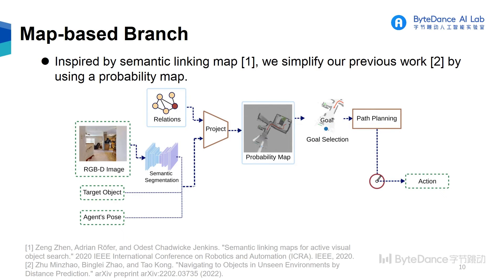In the map-based branch, inspired by the semantic linking map, we simplify our previous work by using a probability map. Based on the probability map, we select goals with the largest probability and perform path-planning to get an action.